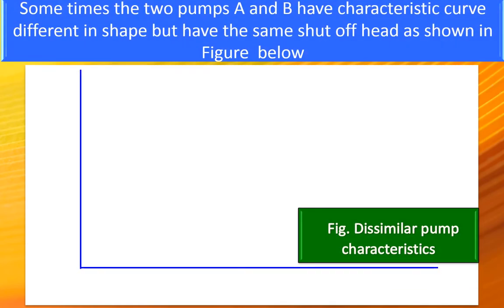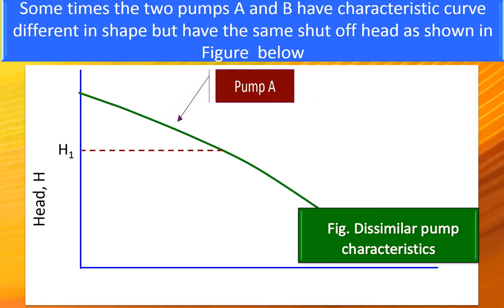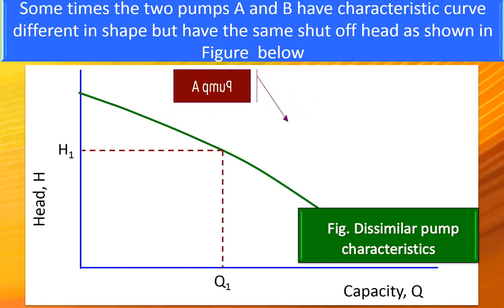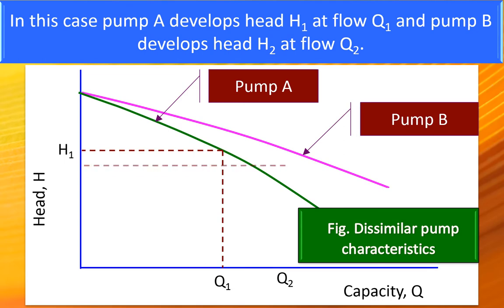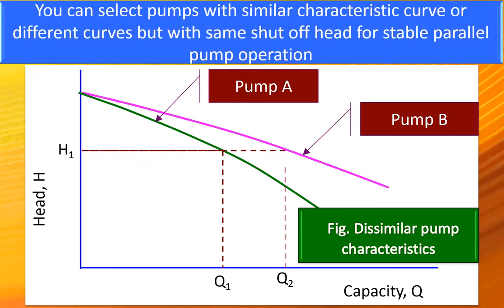Sometimes the two pumps A and B have characteristic curve different in shape but have the same shutoff head as shown in the figure below. In this case, pump A develops head H1 at flow Q1 and pump B develops head H1 at flow Q2. You can select pumps with similar characteristic curve or different curves but with same shutoff head for stable parallel pump operation.